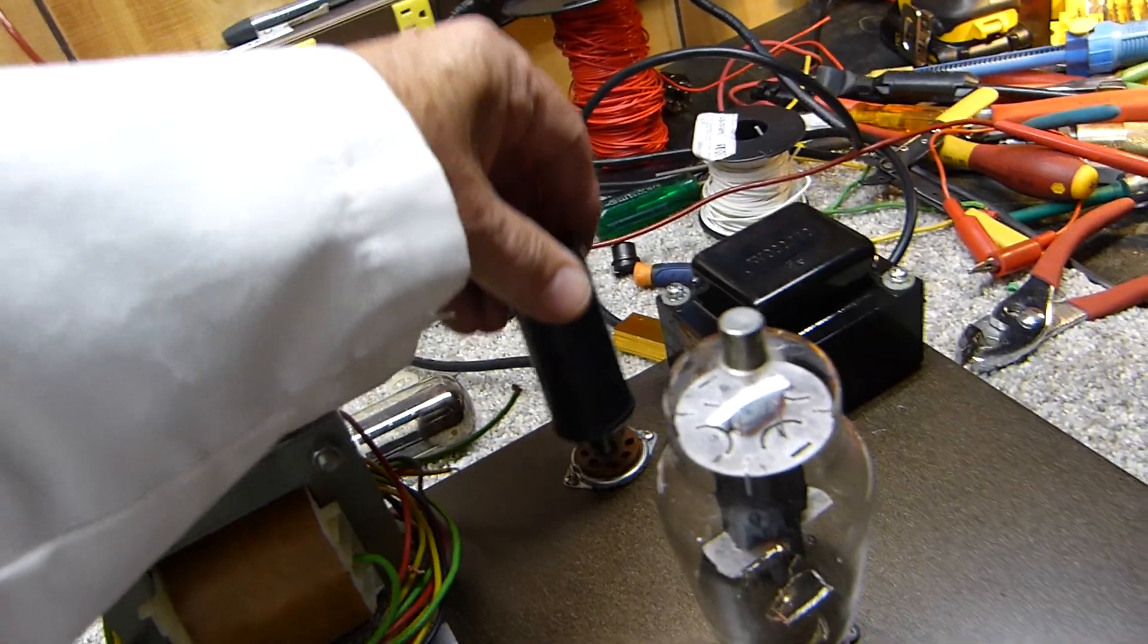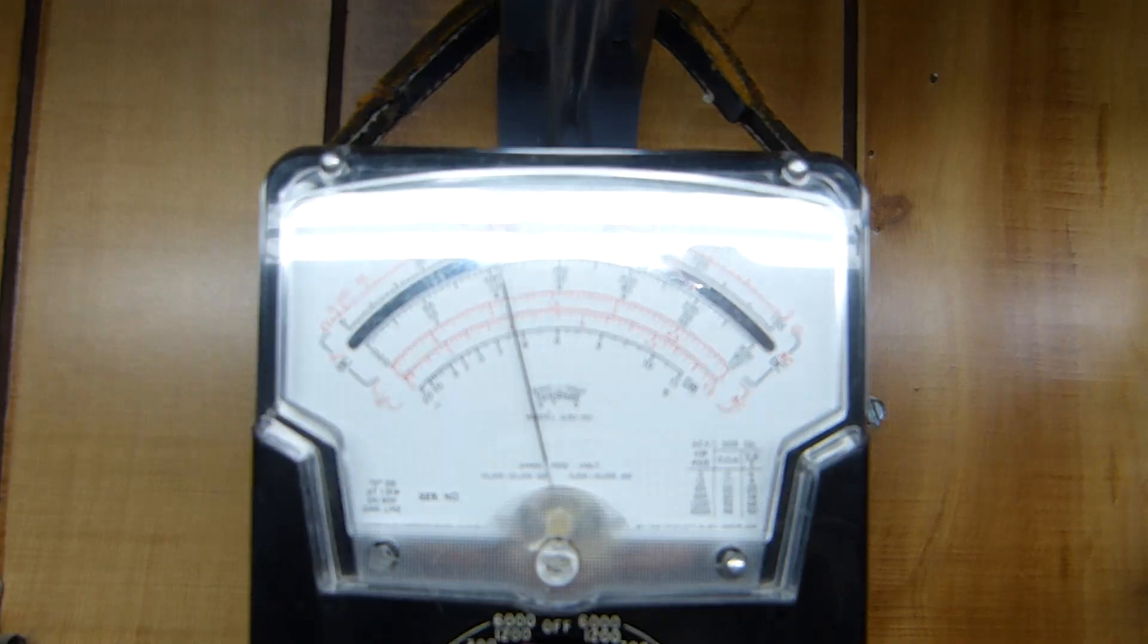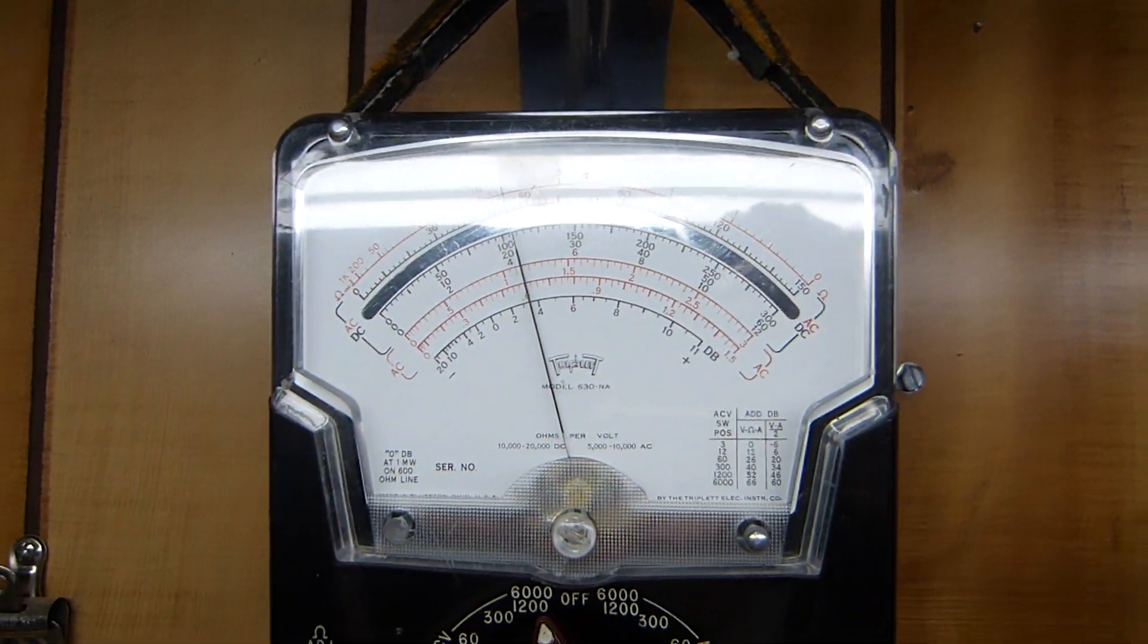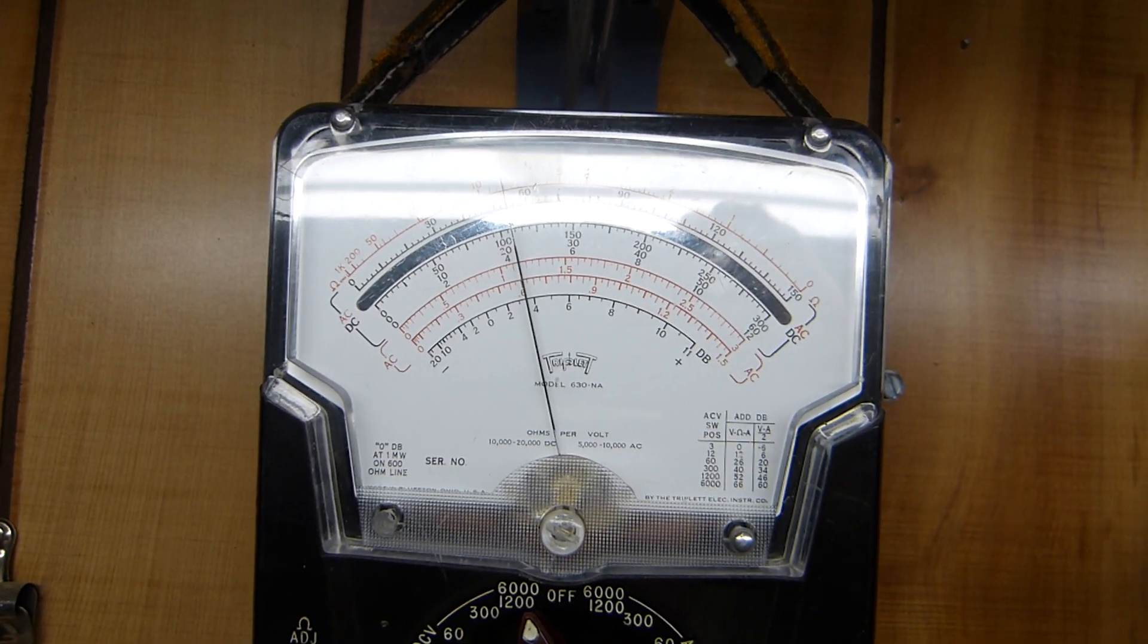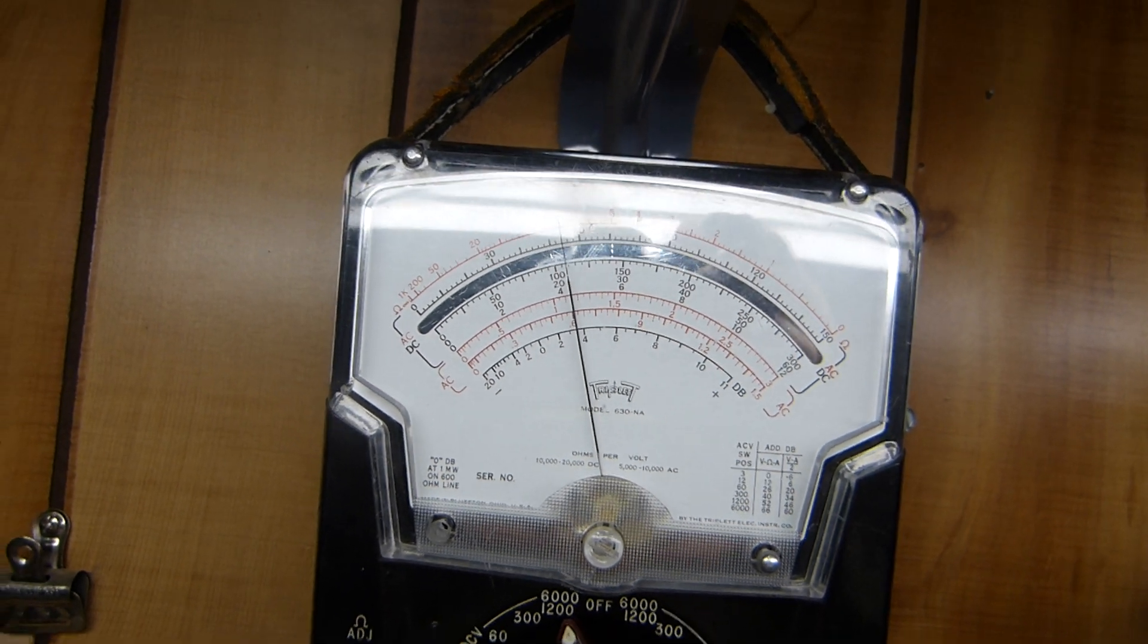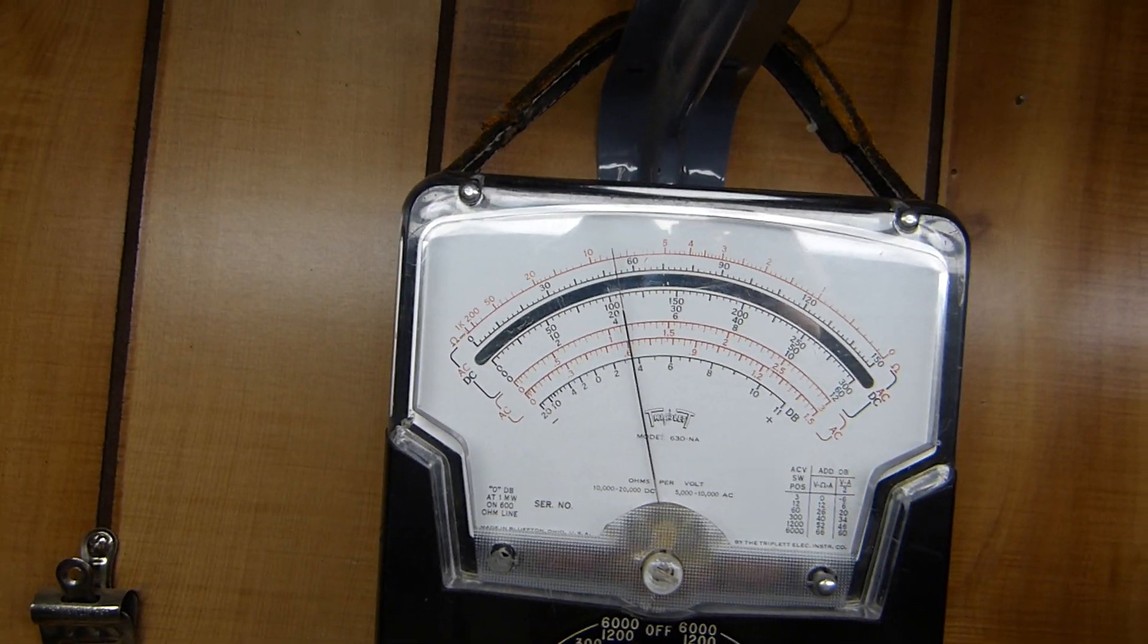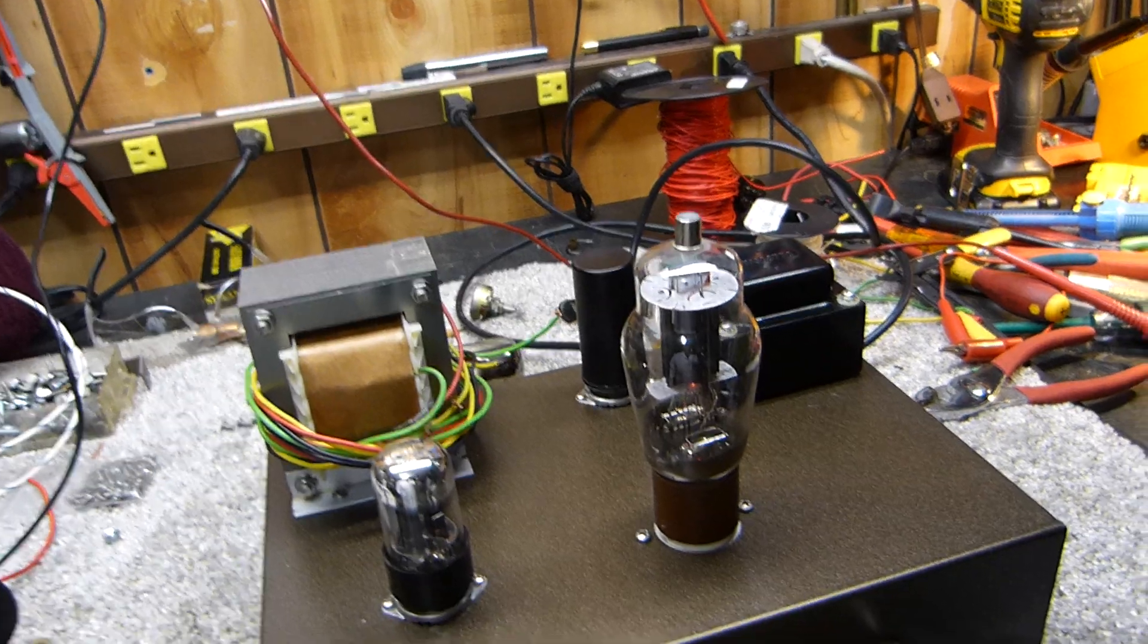And put in a solid state rectifier. Watch what the voltage goes to. Can you see that? That's just a tiny bit less than 440—I'd call it 435 from my viewpoint. And that's classic. I mean, that's the voltage drop across the 5U4.